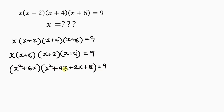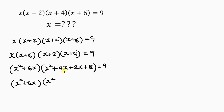Let's simplify. We have (s²+6s) into (s²+4s+2s+8). Notice that 4s and 2s are like terms, so 4s plus 2s gives us 6s. So the second bracket becomes (s²+6s+8), equal to 9.